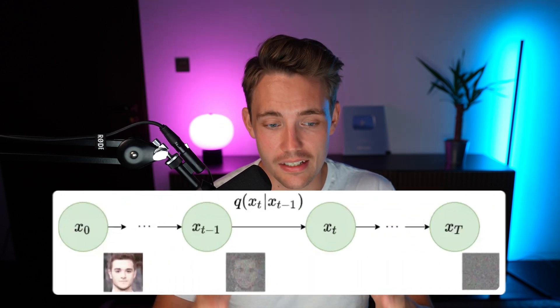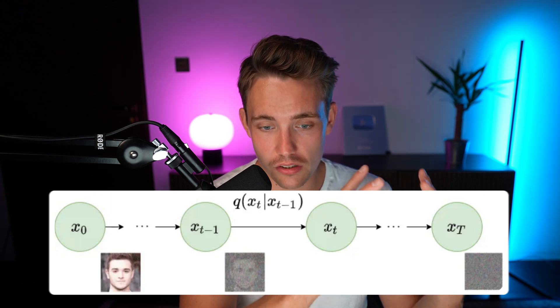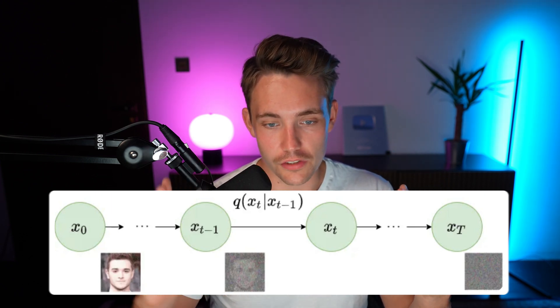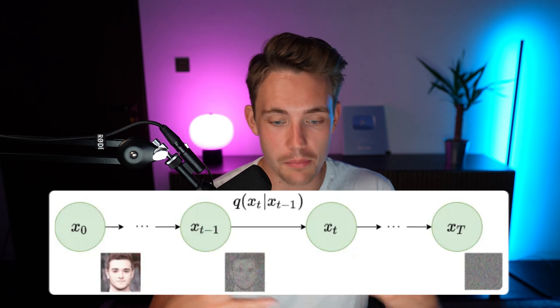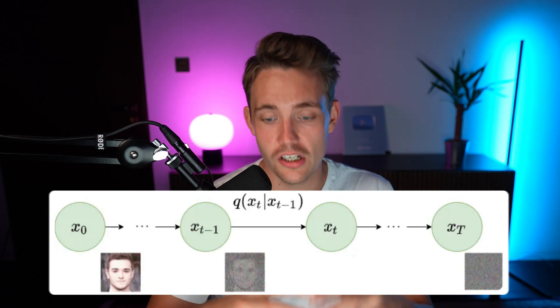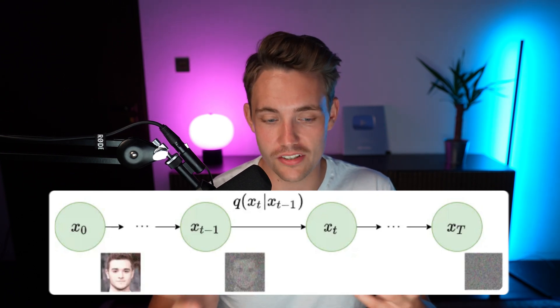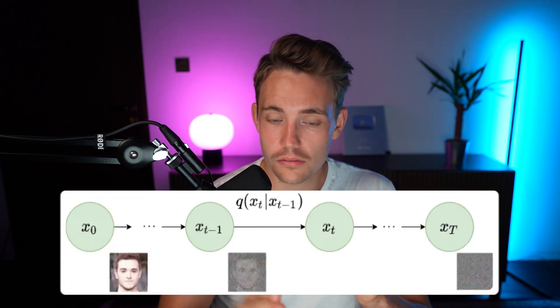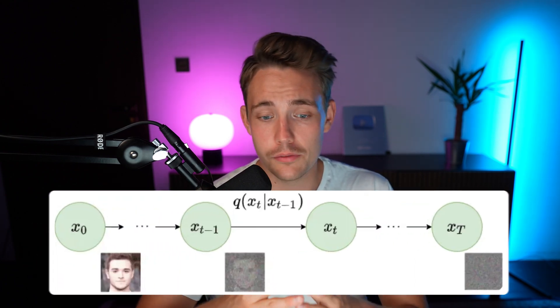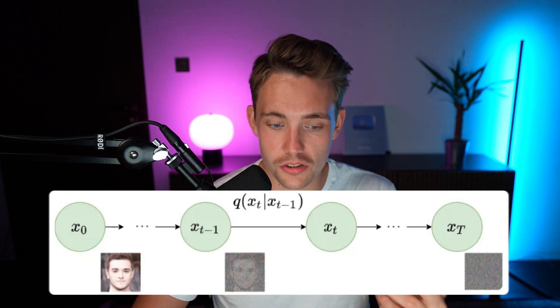Then we have the forward diffusion process. We can see an example here. We start with our original image and then we have these individual steps. This is basically like a Markov chain — a mathematical model where the probability of the next state basically just depends on the current state. So we basically just do next-step prediction, which is used in a ton of different algorithms, including reinforcement learning. We just apply this noise in each individual state and try to predict the next one.